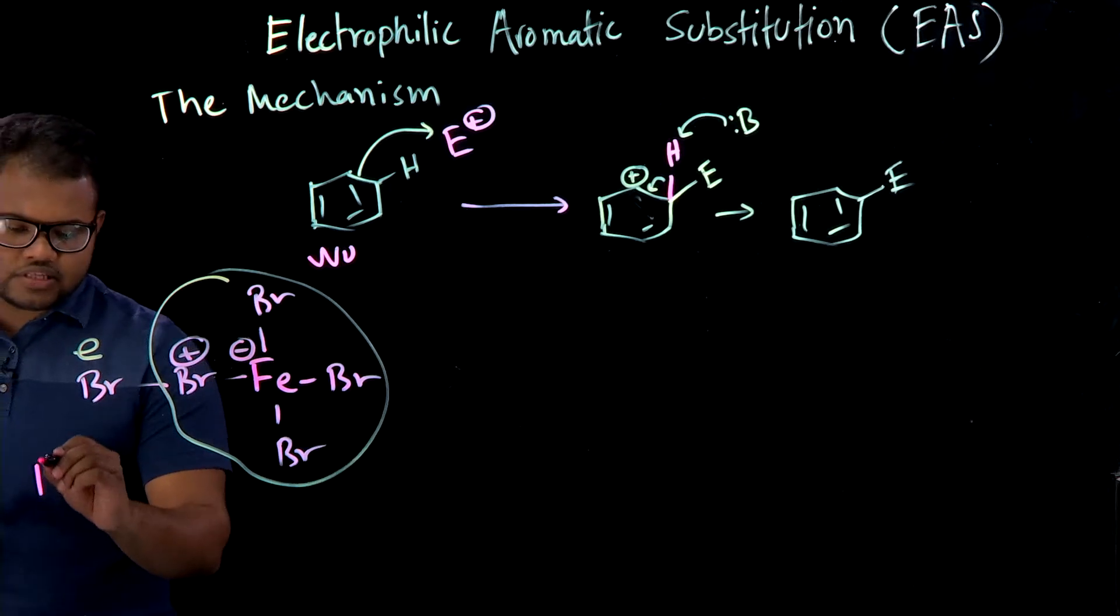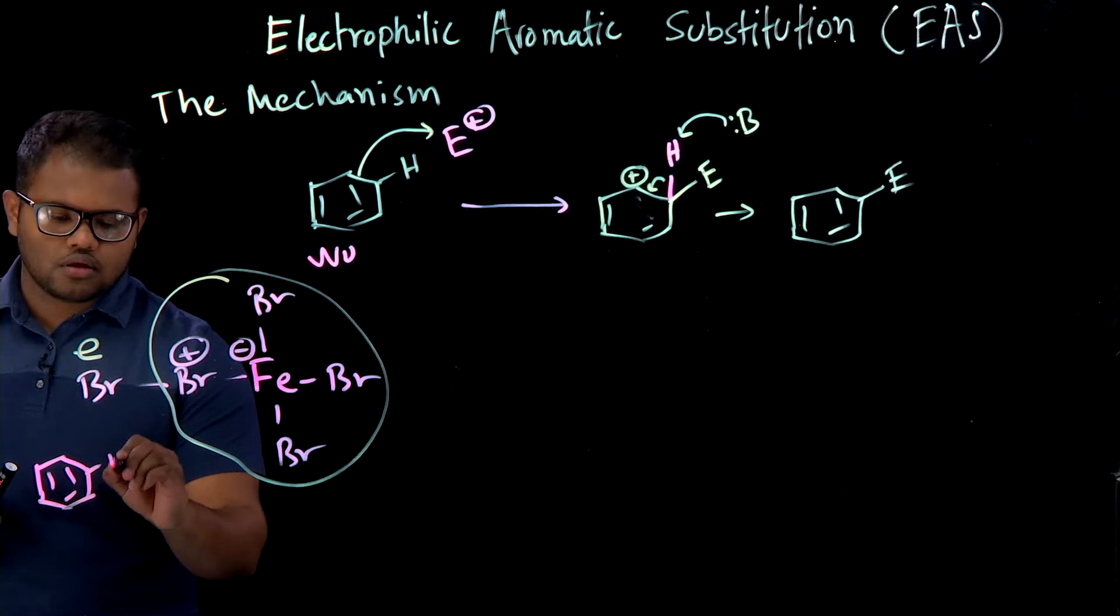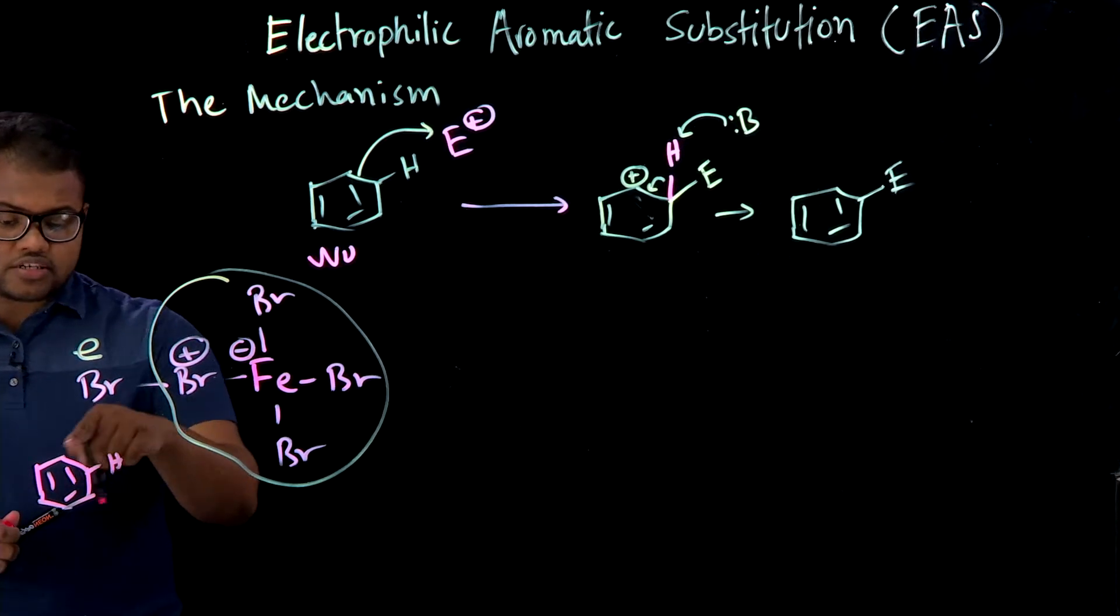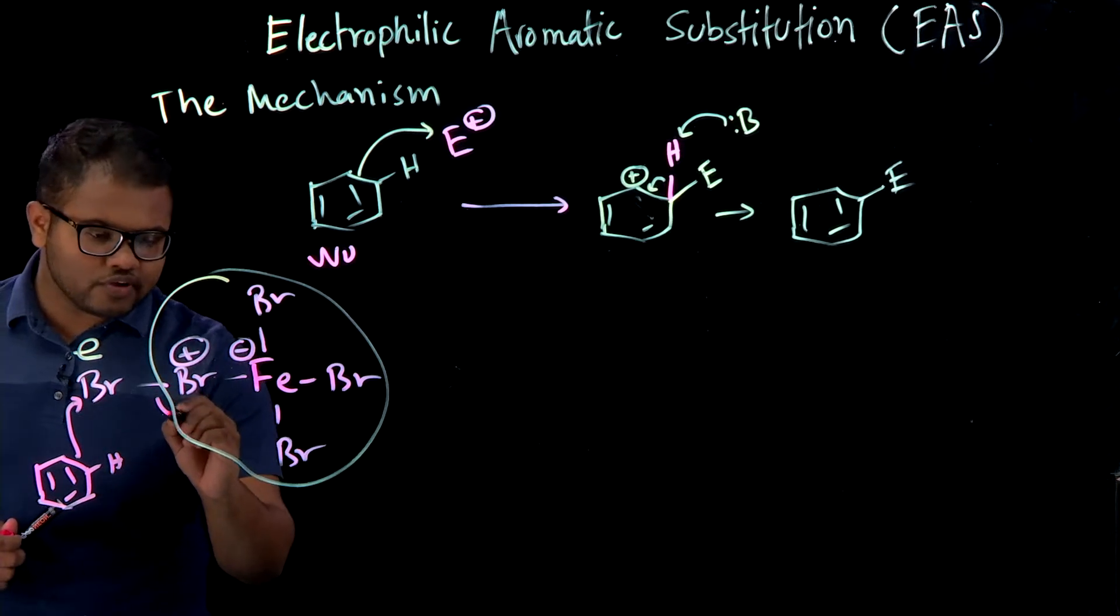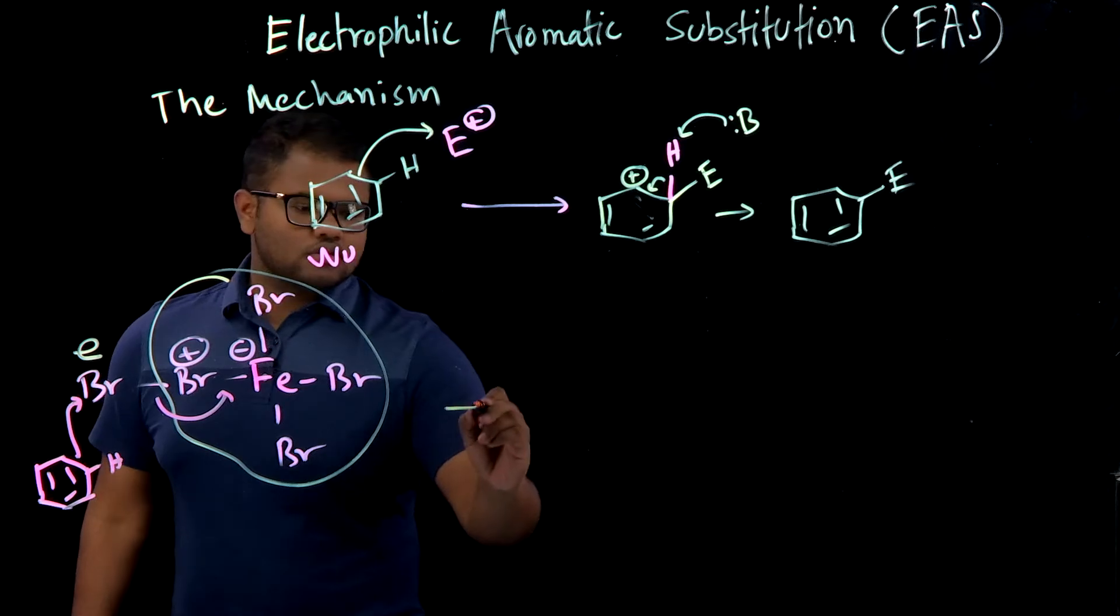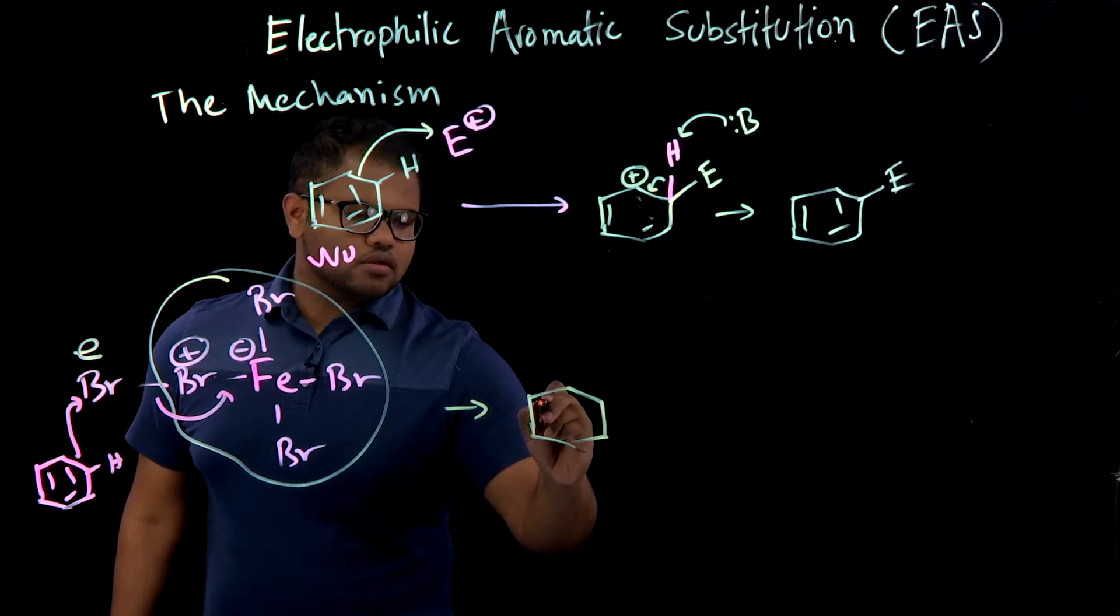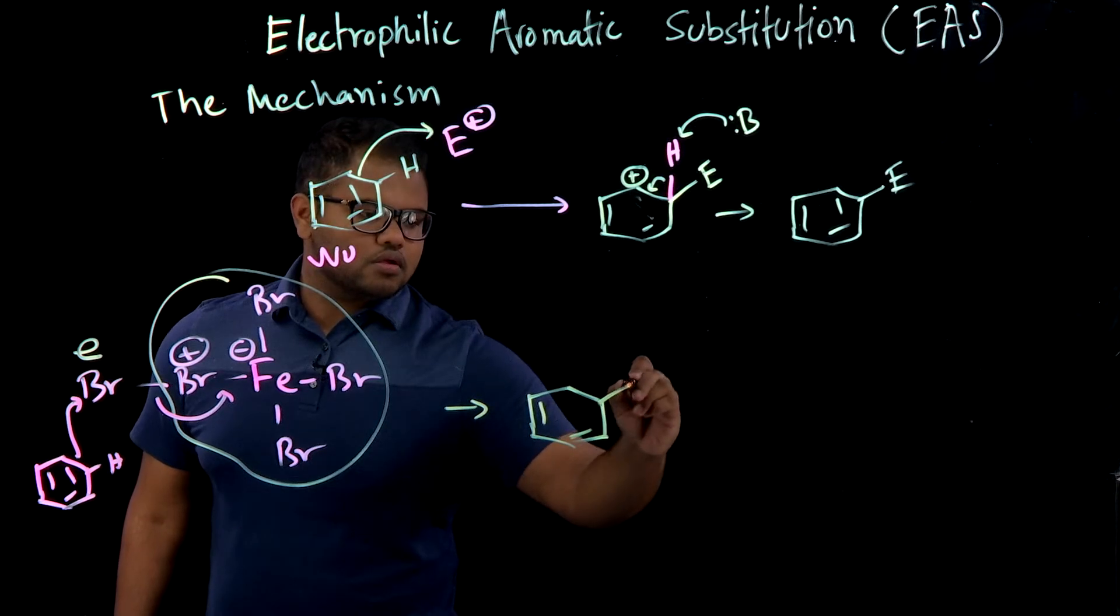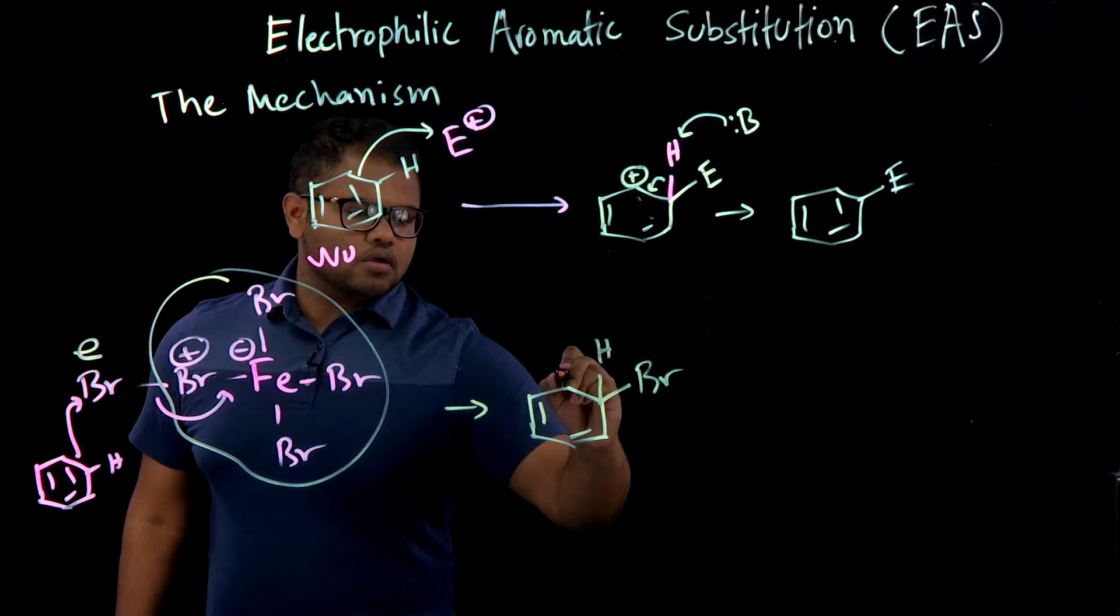So you have your benzene ring. What happens is these electrons from the ring attack the Br and displace this whole leaving group. So that just leaves and you get to this intermediate.